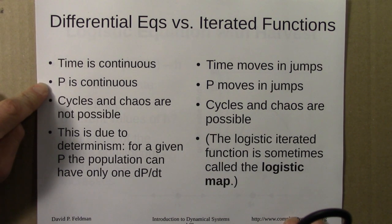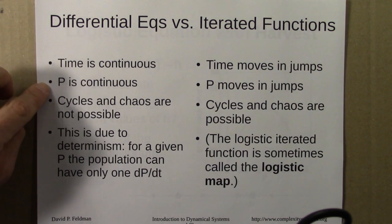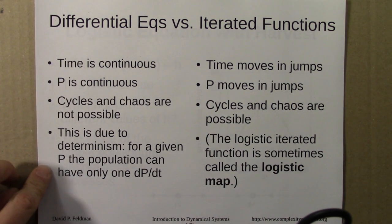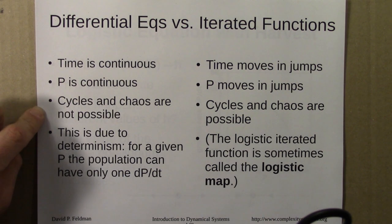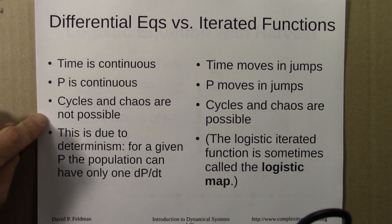If one year the population was 80 and another year it was 100, it had to have gone through all intermediate values between 80 and 100. This fact of continuity together with determinism means that cycles, and hence chaos, are not possible for one-dimensional differential equations of this sort.